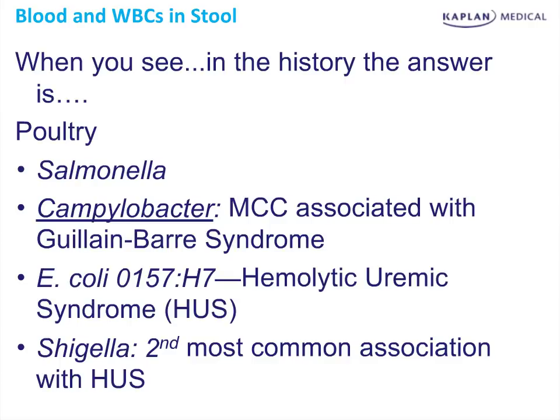These associations are important, but they're not as important as the question: is there blood in the stool or white cells in the stool? Blood or white cells — either one or both — help you identify Salmonella, Shigella, Yersinia, and Vibrio parahemolyticus. The individual presentation is more important than the history of what you ate.